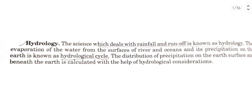Hydrology is the science which deals with rainfall and runoff. The evaporation of water from the surface of rivers and oceans and its precipitation on the earth is known as the hydrological cycle. The distribution of precipitation on the earth's surface and beneath the earth is calculated with the help of hydrological consideration.